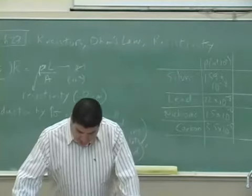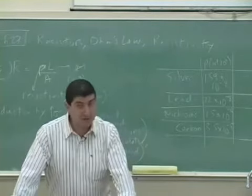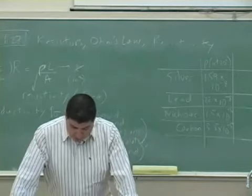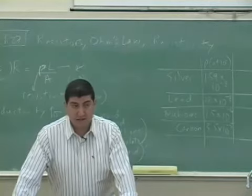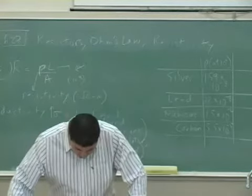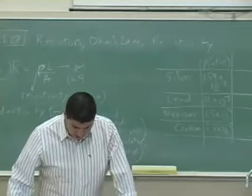And then on the bottom it says the resistivity of silicon is very sensitive to purity. The value can be changed by several orders of magnitude when it is doped with other atoms. Because it's a semiconducting material. So silicon is 10 to the third.